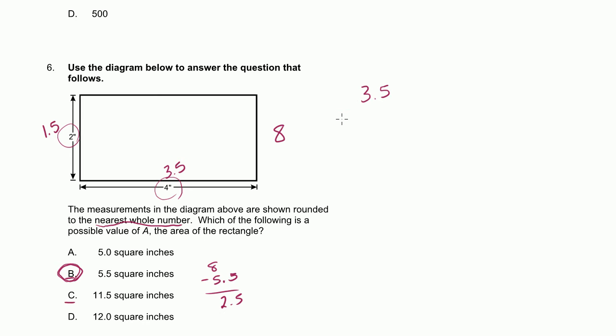So 3.5 times 1.5. See, 5 times 5 is 25. 3 times 5 is 15 plus 2 is 17. Put a 0 down. 1 times 5 is 5. 1 times 3 is 3. You have 5, 7 plus 5 is 12, and then you have 1 plus 1 plus 3 is 5. You have two numbers behind the decimal point, 5.25. So the minimum possible area for this rectangle is 5.25. That's the minimum. So 5.5 is definitely a valid answer. So I'm going to stick with my answer, B.